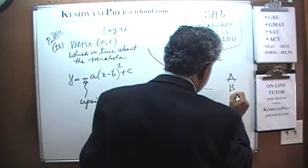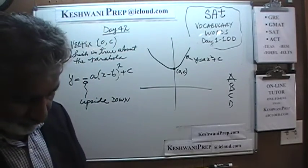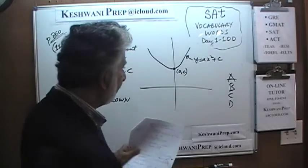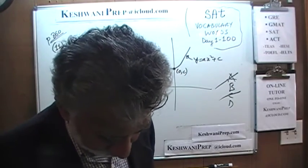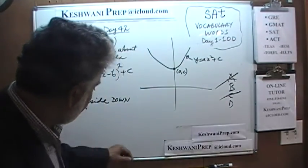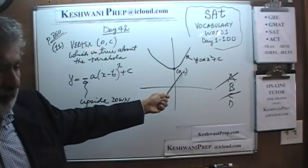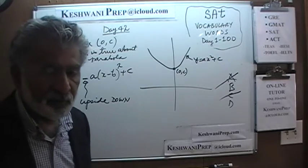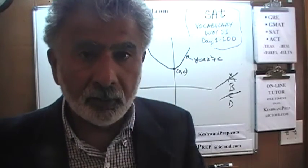Let's look at the answer choices. That's a useful bit of information — we ought to be able to eliminate at least some answer choices. It turns out we can get rid of A and C. Answer choice A says it opens upward; it does not open upward, it opens downward — it is upside down. C says the same thing. So now the contrast is between B and D. When the parabola is upside down, the vertex represents the maximum value, not the minimum.